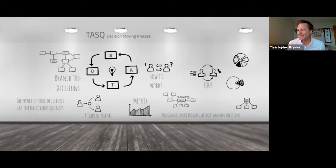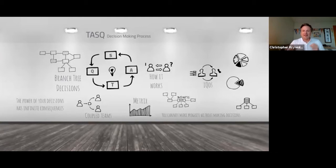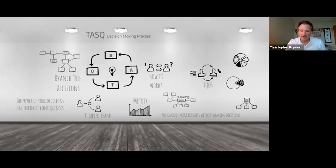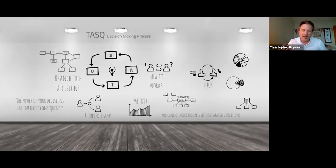Welcome back everybody. The IQOS is our operating system — how we get work done. At the foundation are principles that guide us, like a compass for our decisions. Then there are our practices, like the strategic practices, and within those practices we have a series of processes. Above that sits the architecture and how we organize ourselves.